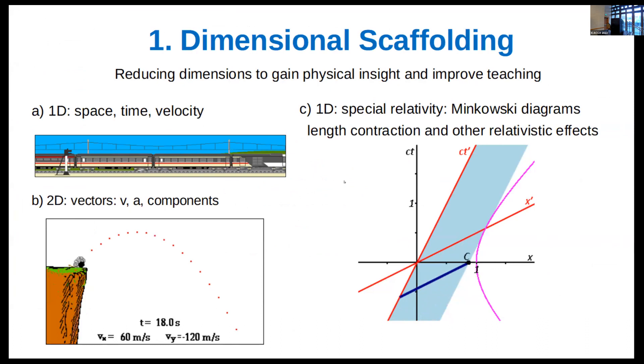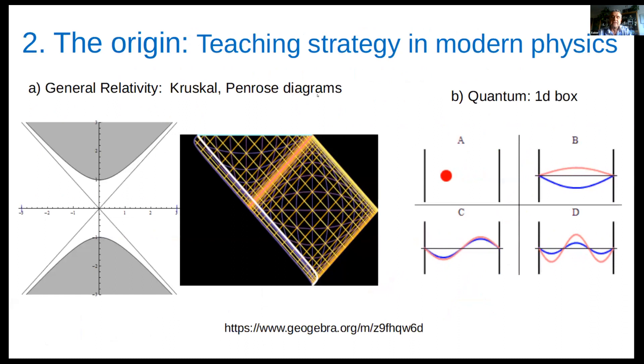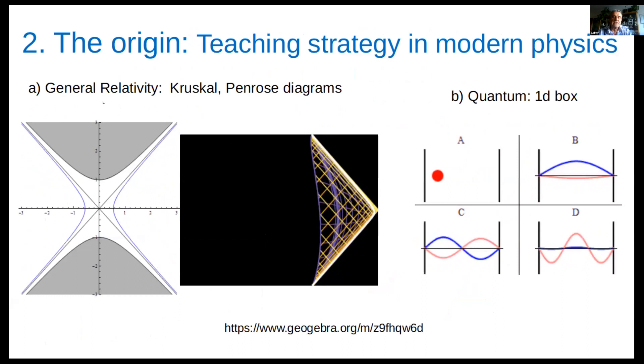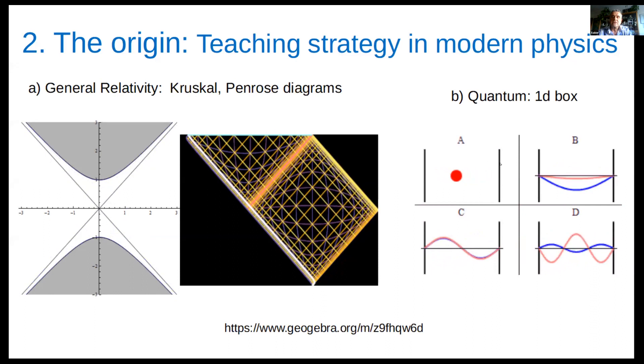Concepts like speed or acceleration are introduced as numerical values in one dimension. In two dimensions, the concept of vector allows further study. Length contraction and other relativistic effects can be explained using one plus one spacetime diagrams. Our original aim was to apply this teaching strategy in electromagnetism. Information about our proposal can be found in the reference.